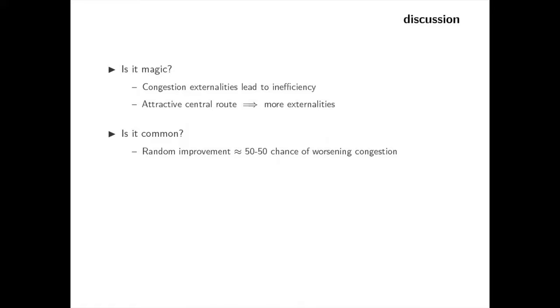Our example is an extremely simple city. Braess's paradox can actually arise in much more realistic networks. Suppose that you create a network at random. You choose a route at random, and you increase its capacity also at random. The probability of making travel time worse is close to 50-50.